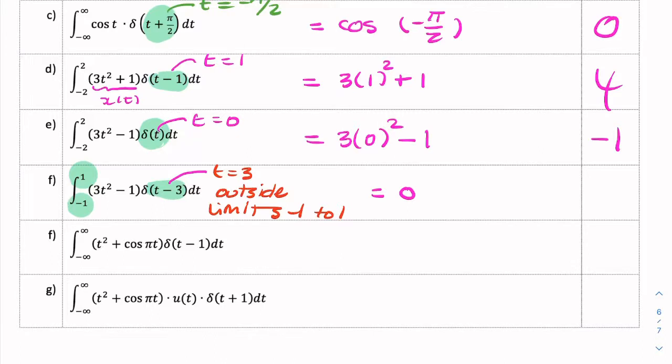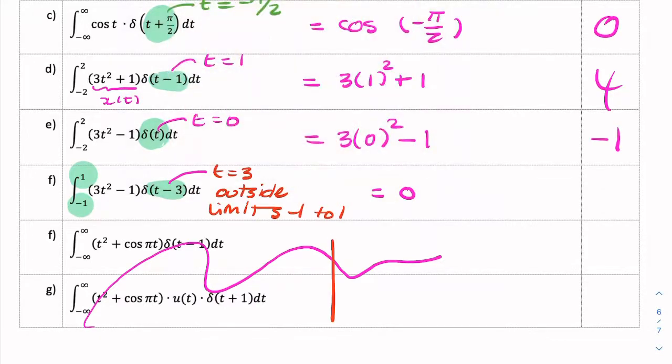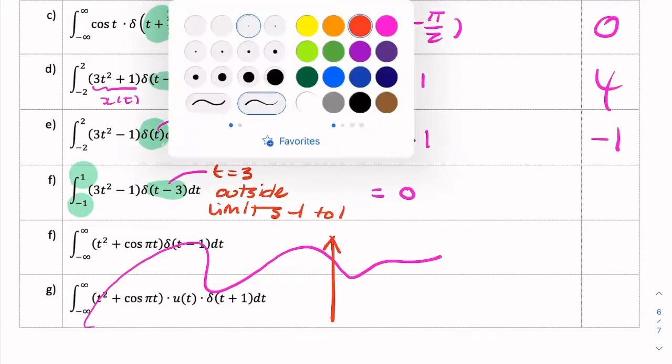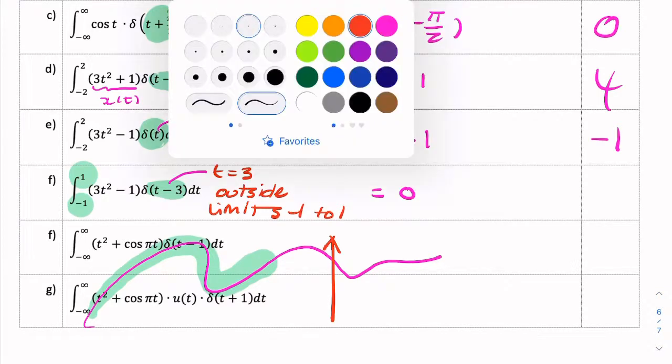Then the answer to the question is simply 0, because you're multiplying something by 0. So you have some function and you're multiplying it by another function, which is your impulse, but you're only integrating for this range.